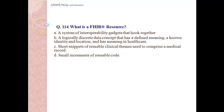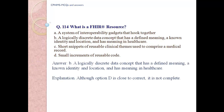Question number 114. What is a FHIR resource? A) A system of interoperability gadgets that hook together, B) A logically discrete data concept that has a defined meaning, a known identity and location, and has meaning in healthcare, C) Short snippets of reusable clinical themes used to compose a medical record, D) Small increments of reusable code. Answer: B, a logically discrete data concept that has a defined meaning, a known identity and location, and has meaning in healthcare. Note: option D is close but not complete.